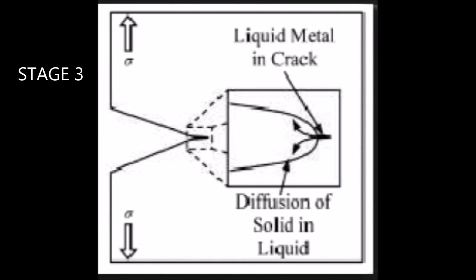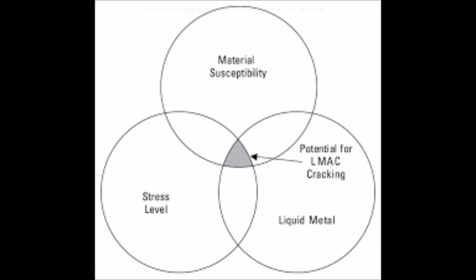According to the conventional mechanism, the lower-melting-point liquid metal fills a crack in the solid metal, thereby weakening the material at the crack tip and allowing it to propagate at much lower stress.